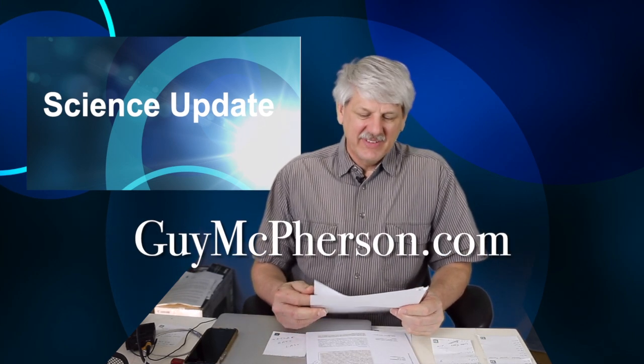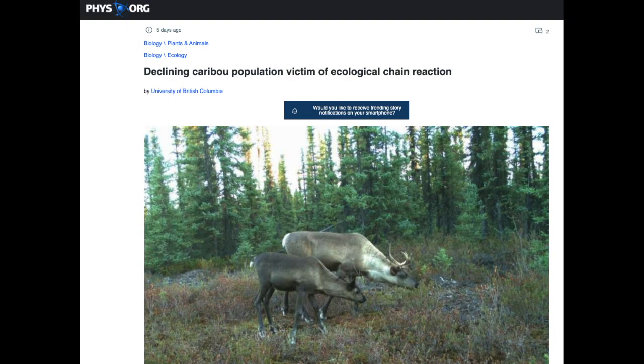Starting with a paper from fizz.org, March 19th, 2021, titled Declining Caribou Population, Victim of Ecological Chain Reaction. Hmm, Ecological Chain Reaction. That sounds kind of curious. I wonder what that means.